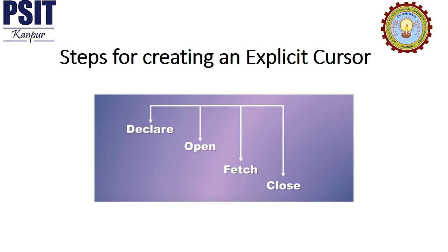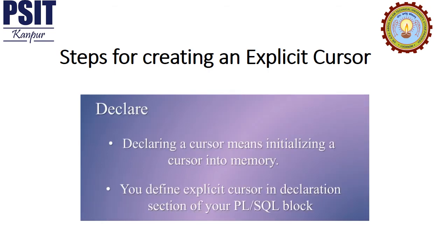These are the steps for creating an explicit cursor. To create an explicit cursor you need to follow four steps: DECLARE, OPEN, FETCH, and CLOSE. In the case of an implicit cursor, the Oracle server performs all these steps automatically for you. Now let's take a quick look at all these steps one by one.